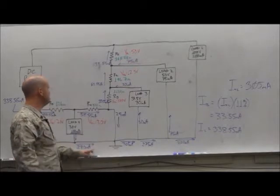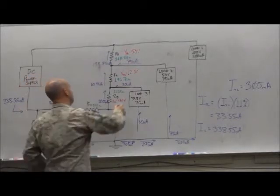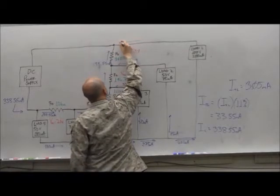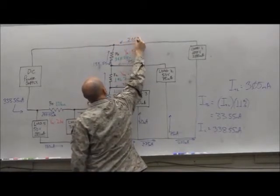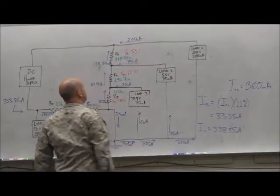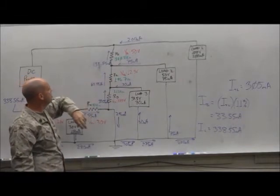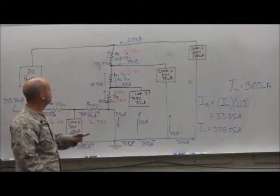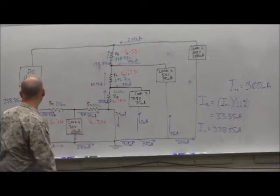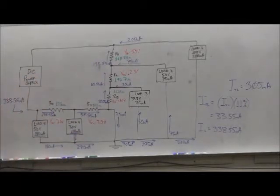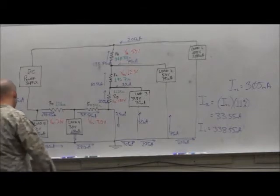Okay, last but not least, the current going into this node. I had 200 milliamps coming from load 1, 138.55 milliamps coming across R1. They meet up at that node combined to give me 338.55 milliamps. Any questions on the complex voltage divider? Okay.